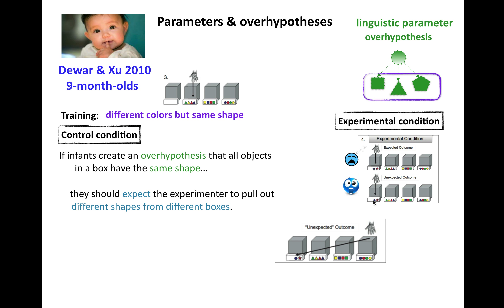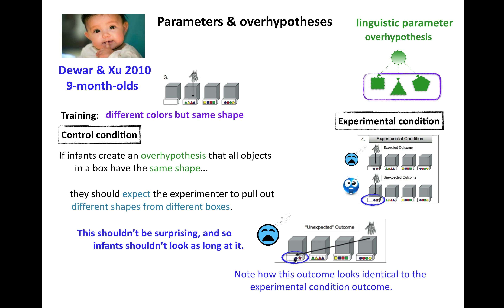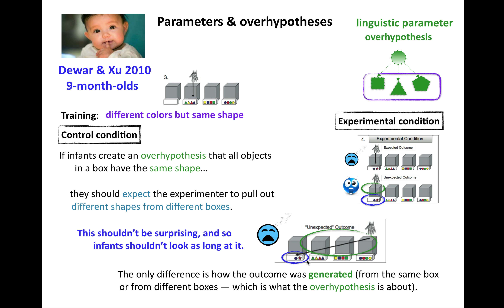As a control condition, if you pull out a star from the new box and then reach over to the first box and pull out a circle, that should not be surprising — because you pulled the circle from the circle box and the star from a new box. That doesn't violate the over hypothesis. Importantly, the visual outcome — two different shapes in front of the fourth box — is the same, but what differs is the generating process: pulling them from the same box is weird and violates the over hypothesis; pulling them from different boxes does not.